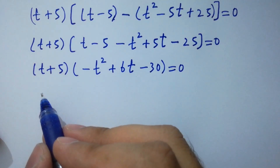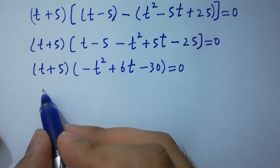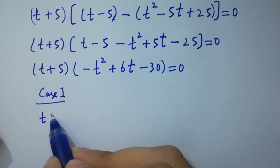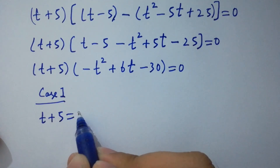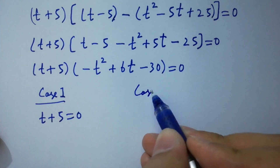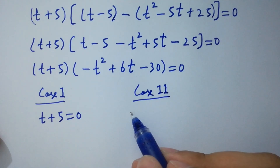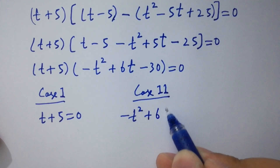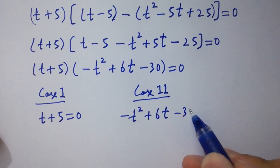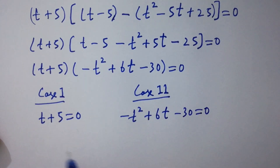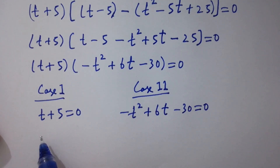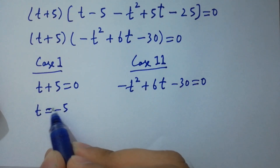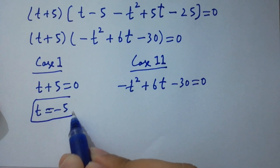So we have two cases here. Case 1: t plus 5 equals 0, and Case 2: minus t squared plus 6t minus 30 equals 0. From Case 1, we have t equals minus 5, which is our first real solution.